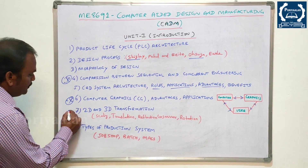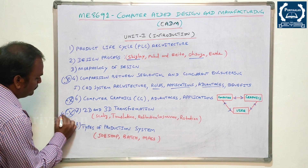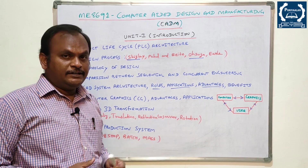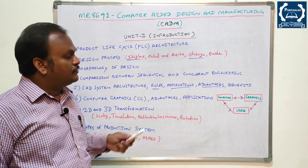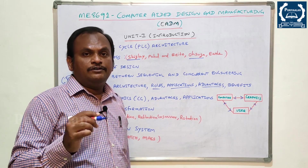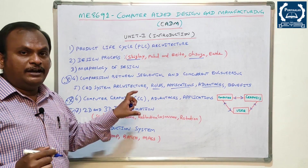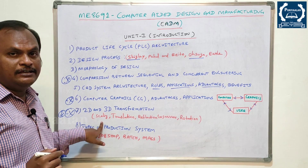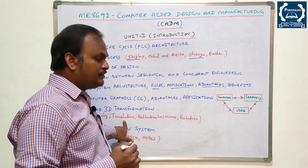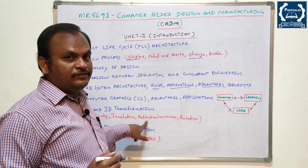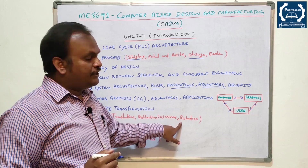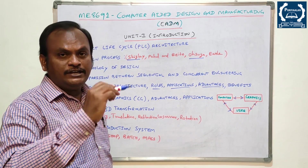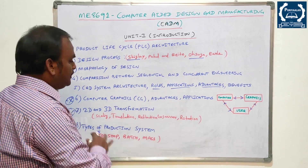The seventh question is 2D and 3D Transformation — very very important. In 2D and 3D Transformation, you can draw a chart with the various matrix formulas. The transformations are: Scaling (S), Translation (T), Reflection or Mirror (R/M), and Rotation. Scaling is zoom, translation is translate, reflection is mirror — a component in XY plane — and rotation involves various angles.